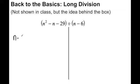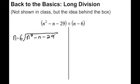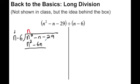In a typical long division problem, I would take n minus 6 and divide it into n squared minus n minus 29. You ask: what do I need to multiply n by to get n squared? The answer is n, because n times n is n squared. Then we take this n and multiply it by each of the terms in the divisor, getting n squared minus 6n.